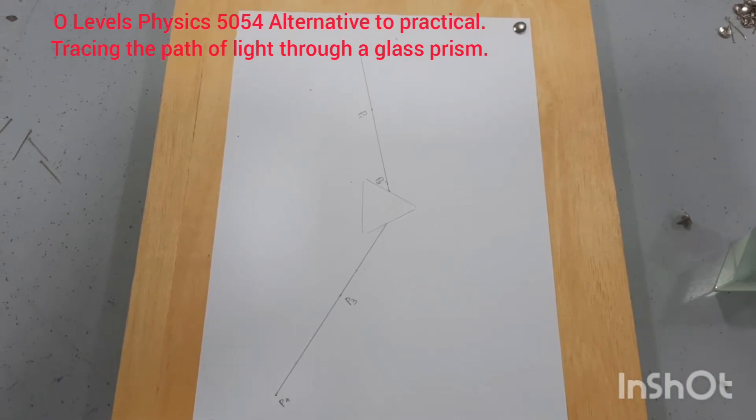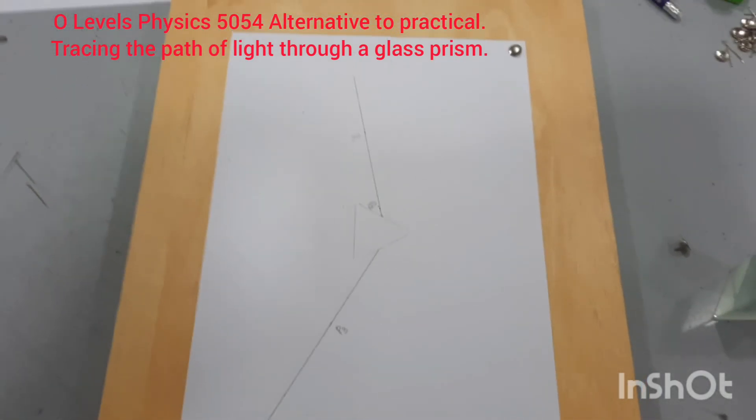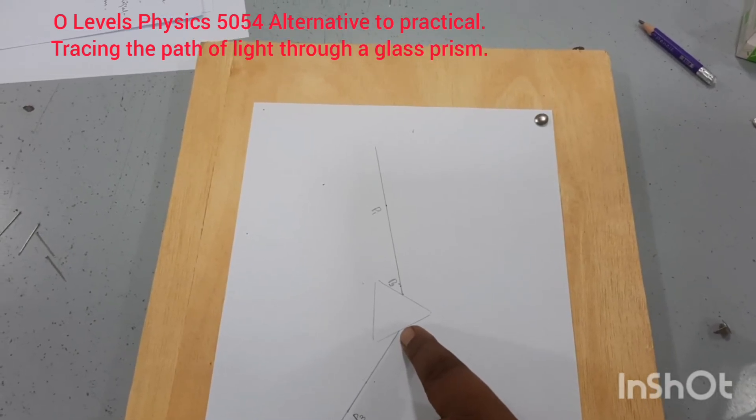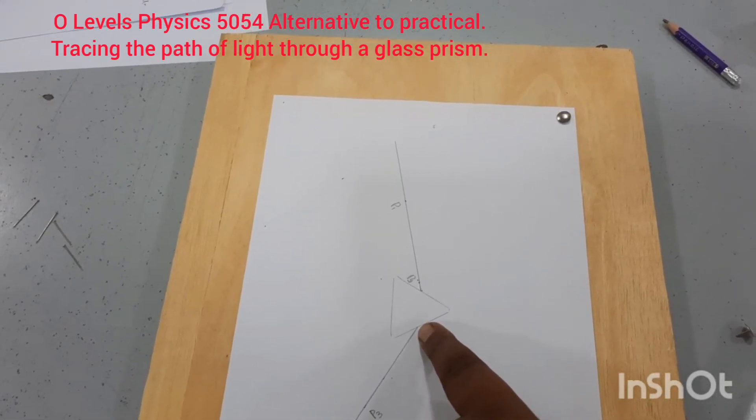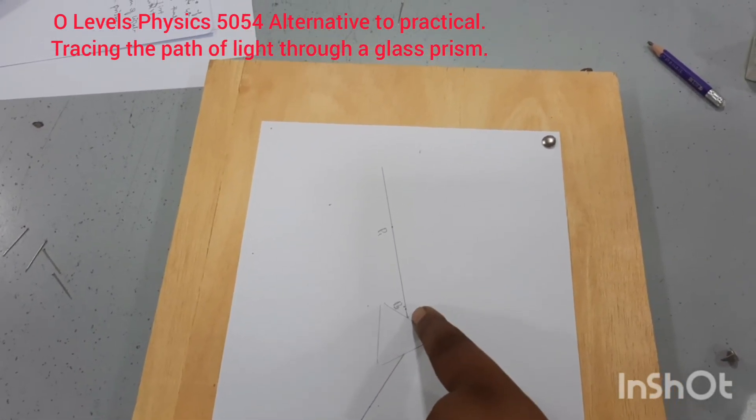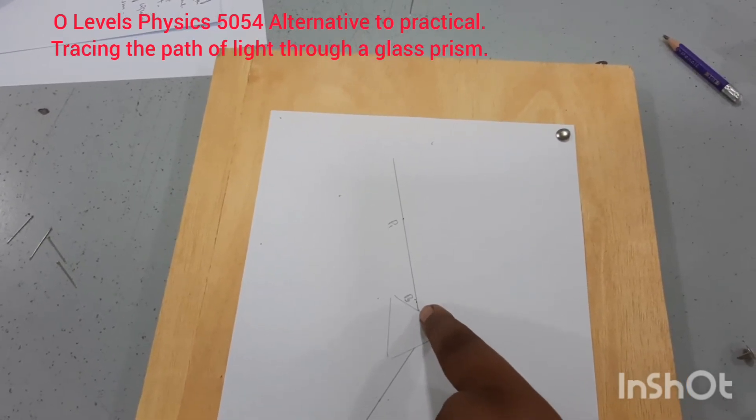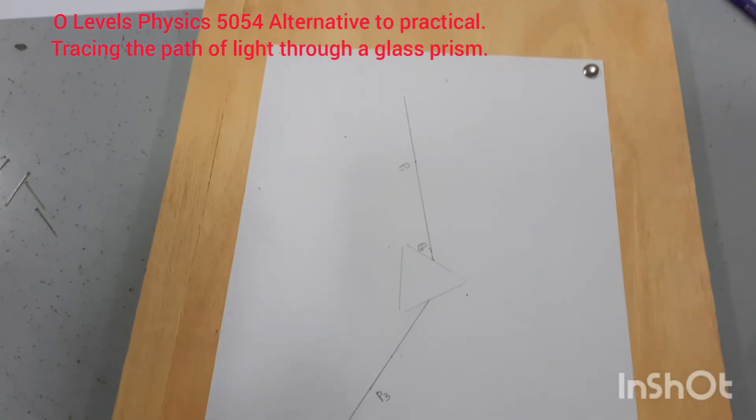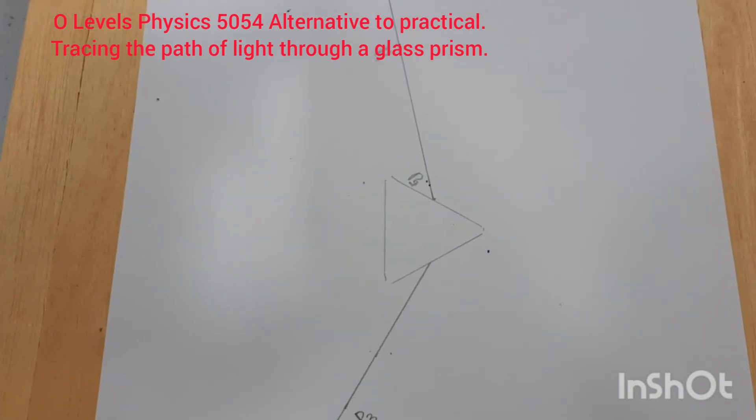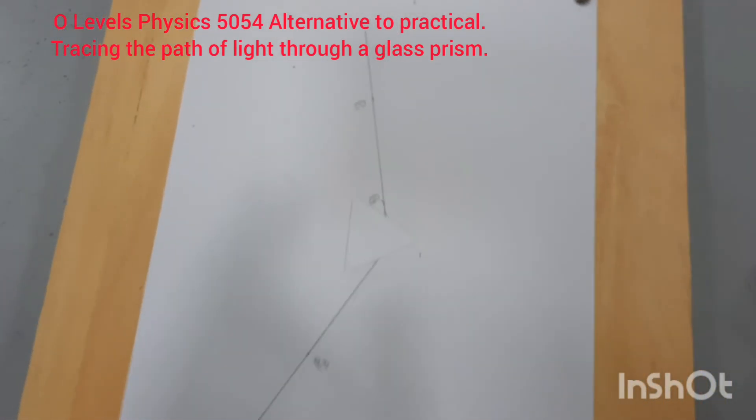Now join the point where this ray touched the face of the prism and this ray touched the face of the prism. Join them with each other. This will be the path of the light in the prism.